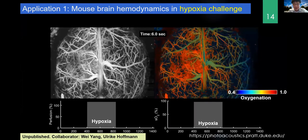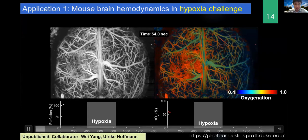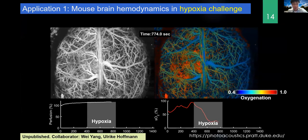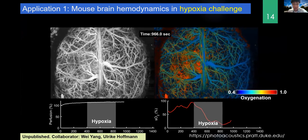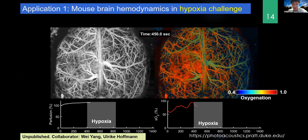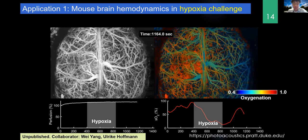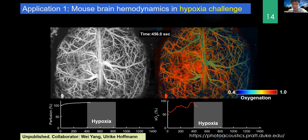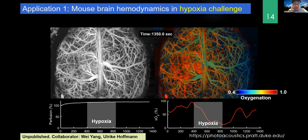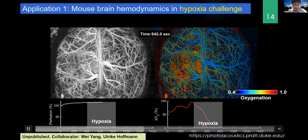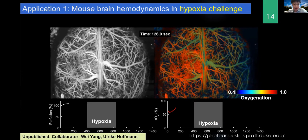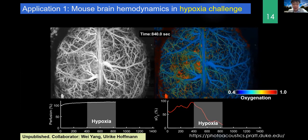The first example is imaging mouse brain hemodynamics under a hypoxia challenge. Initially the mouse breathes normal air with 20% oxygen, then we feed the animal 2% oxygen breathing air. The oxygenation map on the right very clearly shows the brain becoming hypoxic — blue means hypoxic, red means high oxygenation. If you just look at perfusion on the left, which is blood perfusion of vessels, you don't see much change. Vessel perfusion stays the same under hypoxia, but oxygenation is very clearly modulated by the hypoxic challenge.